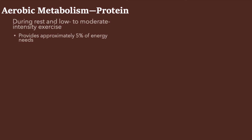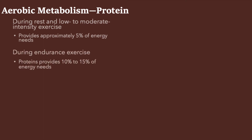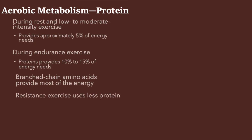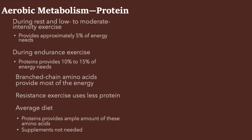The body can utilize protein as an energy source. During low to moderate intensity exercise, it provides about 5% of energy needs. During endurance exercise, it provides about 10 to 15%. Proteins are broken down into amino acids — specifically branched-chain amino acids — which provide most of this energy. During resistance exercises, we don't utilize as much protein as during long-distance running like a marathon.